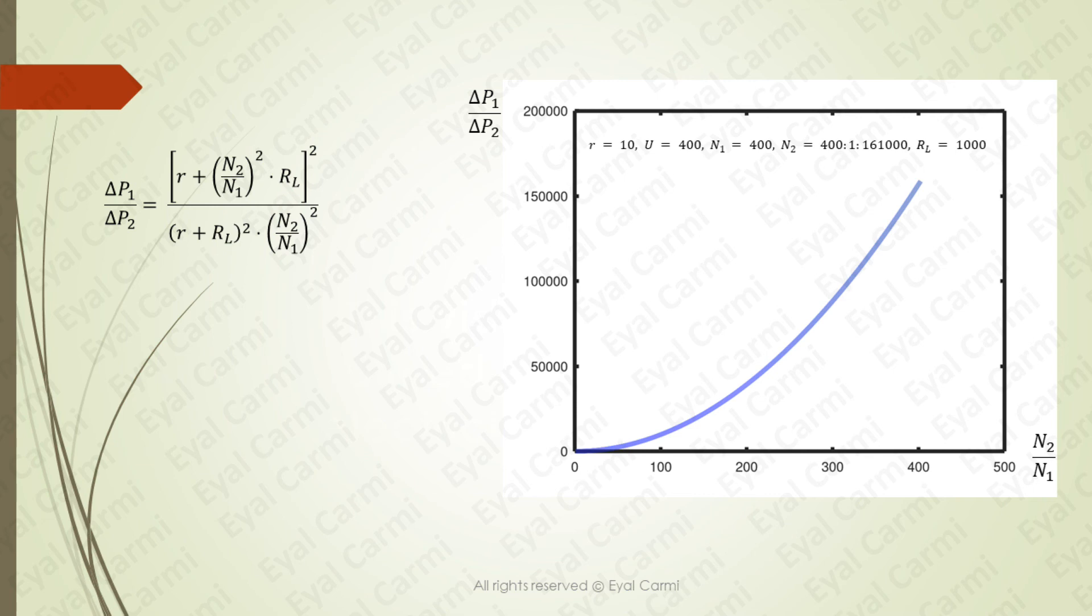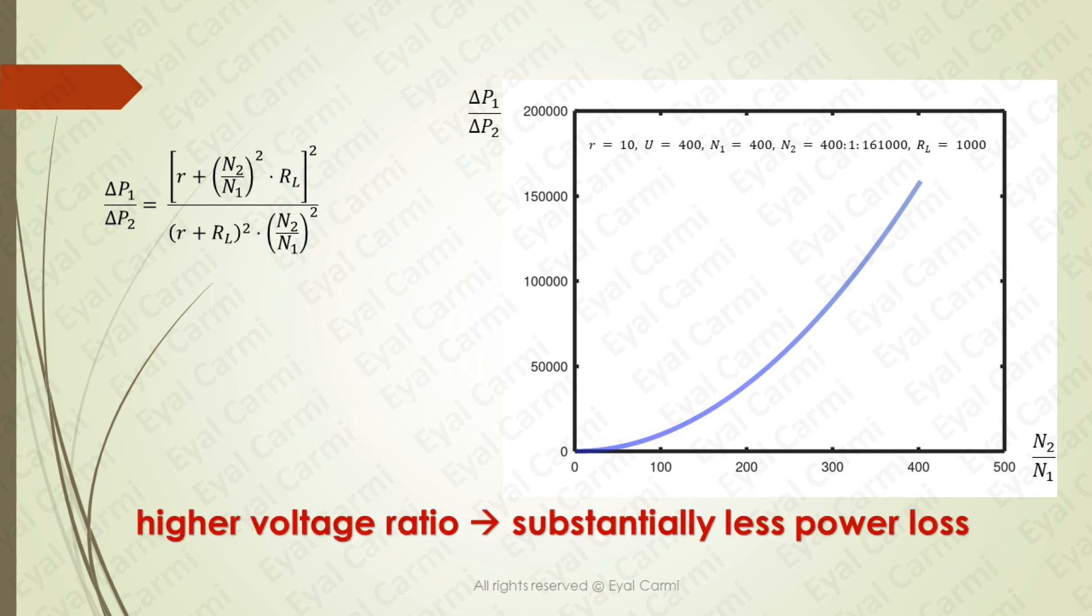As you can see in the graph, increasing the turn ratio N2 divided by N1 which represents higher transmission line voltage considerably increases the ratio of the power loss between the circuit without transformation and the one with transformation. That is, higher transmission line voltage considerably decreases the transmission line power loss.